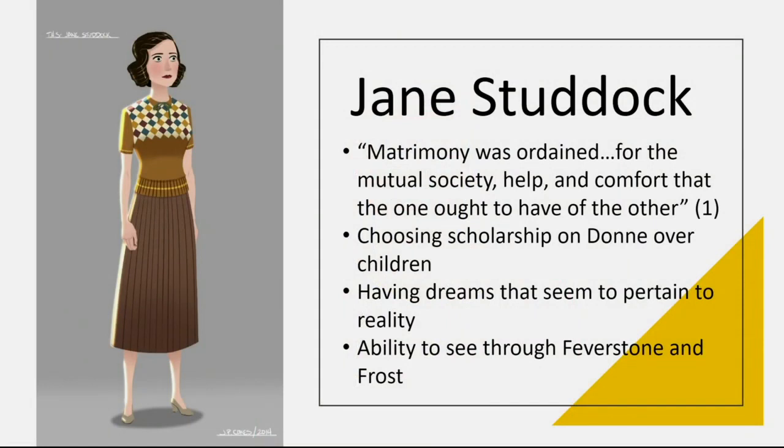The novel begins not with Ransom but with Jane Studdock and Mark Studdock, two characters on parallel journeys. Jane and Mark are married, but instead of the unification we saw in Perelandra—where Adam meets his Eve in a festival of joy—this novel begins in a broken marriage. The opening words show Jane repeating to herself what marriage is supposed to be, as pronounced during her ceremony, yet finding that the reality does not match those words.